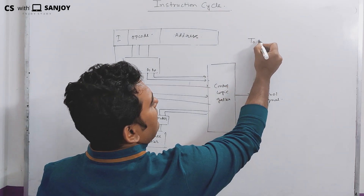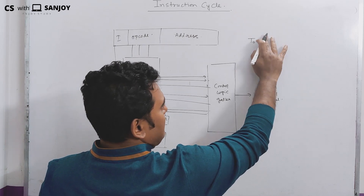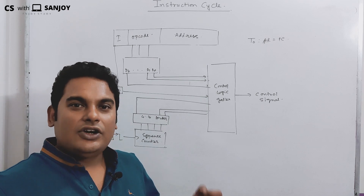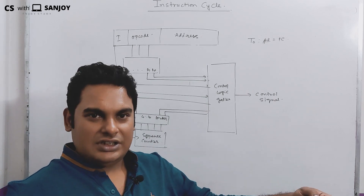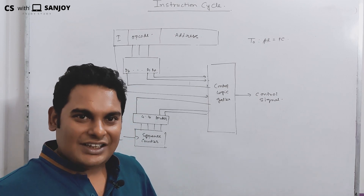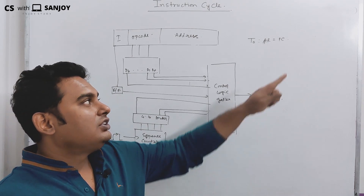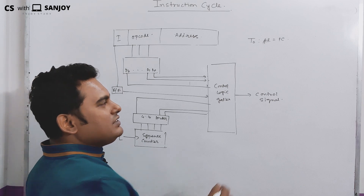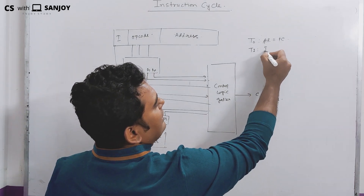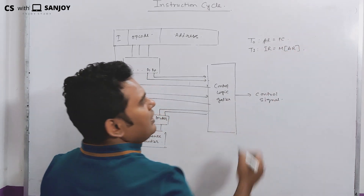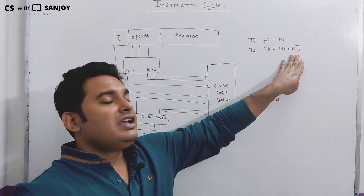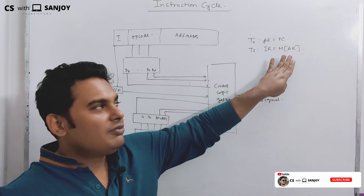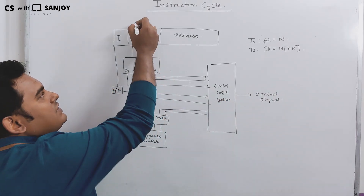At timing T0, the instruction is addressed by the program counter. The program counter keeps the address of the next instruction to be executed. The current instruction address goes into the address register, which is an integral part of the processor. It fetches the instruction from memory and puts it into the instruction register.